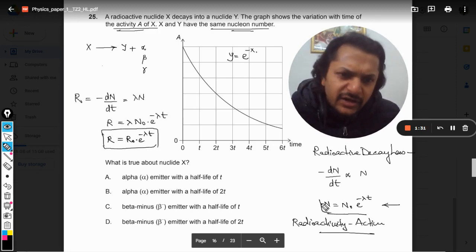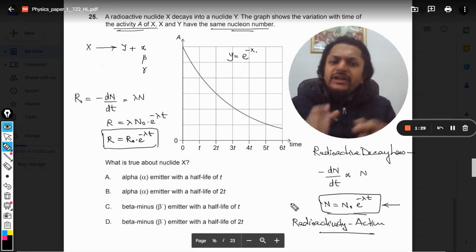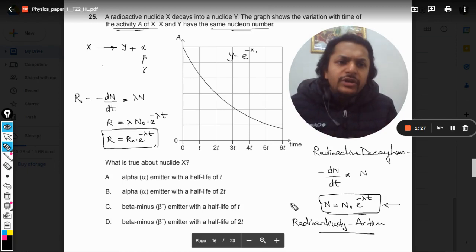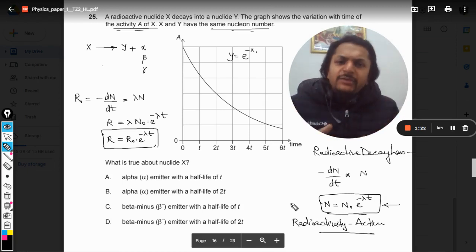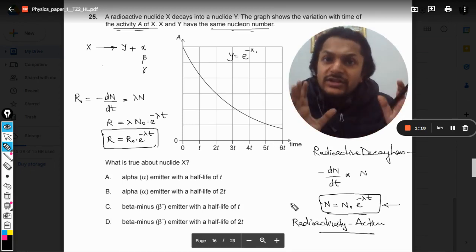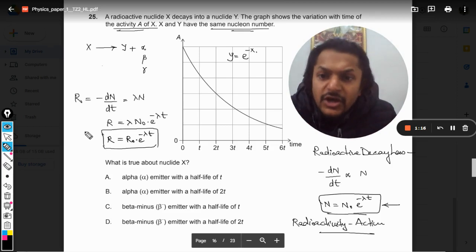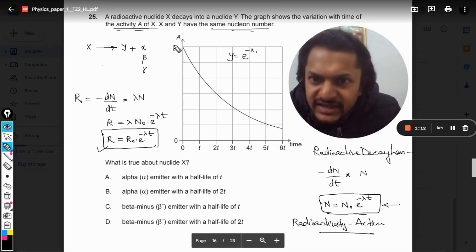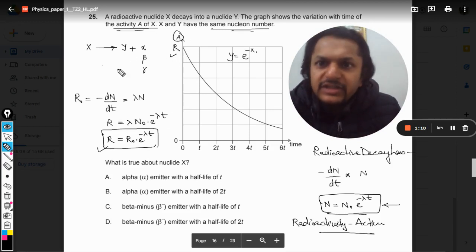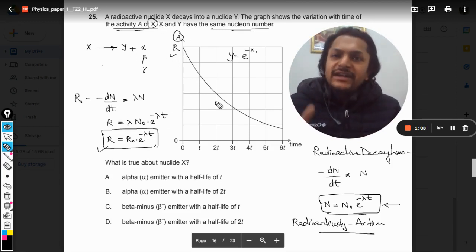If you need a little more information or description about this, like how we have derived this form, I have tried my best to explain. Even if you feel you need more, you can just mention that in the comment section. So R = R₀e^(-λt) - this is the activity for the nuclide X that is shown here.